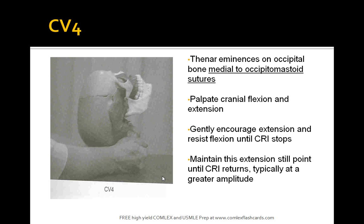The key point in this technique is to resist the flexion and extension forces of the occiput until a still point is reached. After which, the physician releases the area to permit restoration of normal flexion and extension with enhanced CRI amplitude. For the board exam: thenar eminences are placed on the occipital bone medial to the occipital mastoid suture; you palpate for craniosacral flexion and extension, encourage extension and resist flexion until the CRI stops; then maintain the still point until the CRI returns, typically at a greater amplitude. That's the CV4 bulb decompression technique.